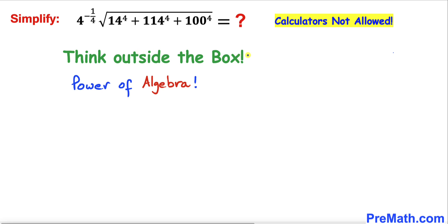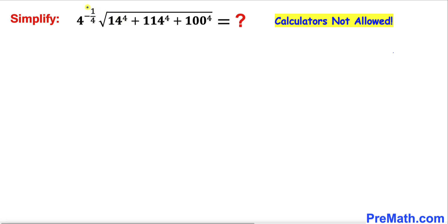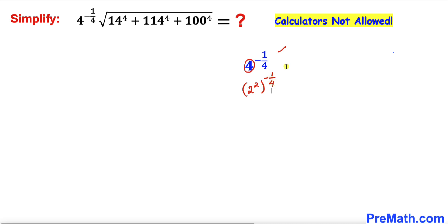Let's get started. Since we are dealing with this challenging problem, we are going to think outside the box and use basic algebra. Here's our very first step: let's focus on this part, 4 to the power of negative 1/4. The base 4 can be written as 2 to the power 2.